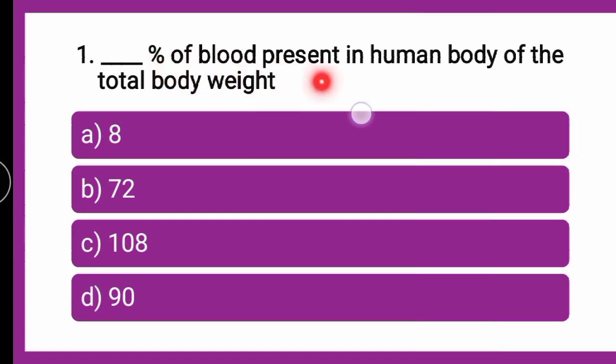The first question is: dash percentage of blood is present in the human body of total body weight. That means out of the total body weight of an individual, what percentage of blood is present? Whether the percentage is 8%, 72%, 108%, or 90%? Put your answers in the comment box. We will go for the explanation and you can verify your answer afterward.